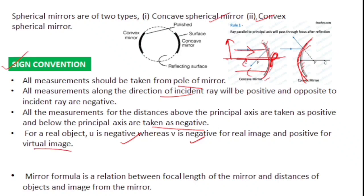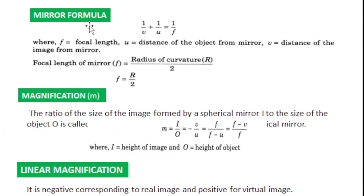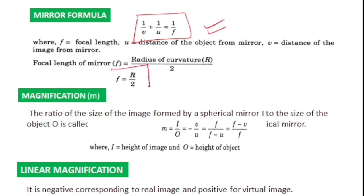There is an important mirror formula: if v is image distance, u is object distance, and f is focal length, then the mirror formula is 1/v + 1/u = 1/f. This is very important when solving numericals. The relation between focal length and radius of curvature is f = R/2.